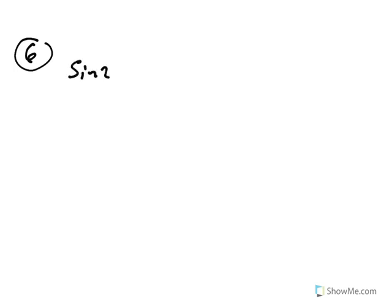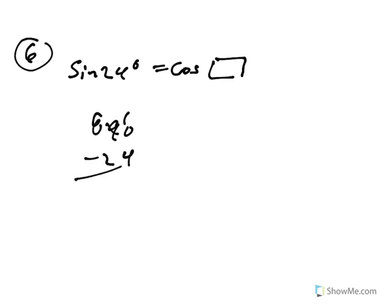Question 6 just says sine 24 = cosine of blank. Those two angles need to add up to 90, so 90 − 24 = 66. The answer is cosine 66. Not much work required for question 6.